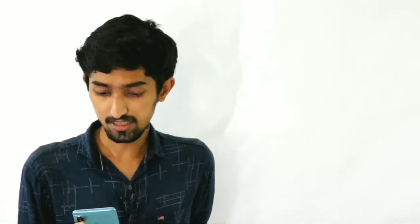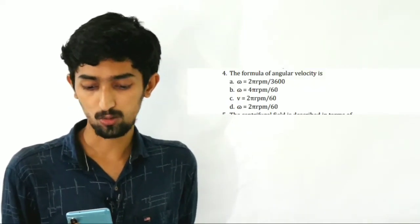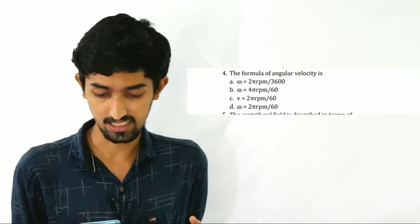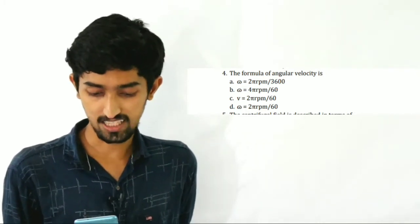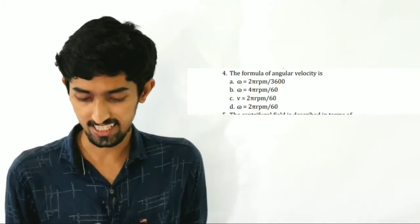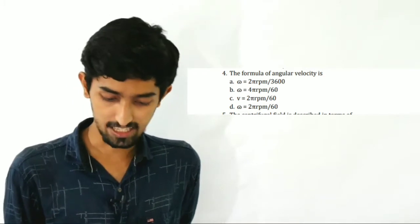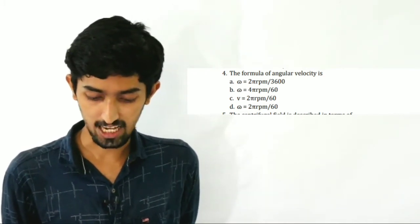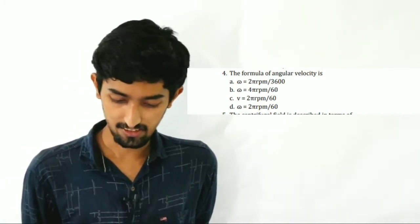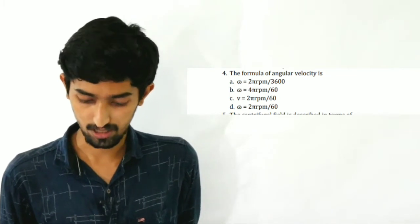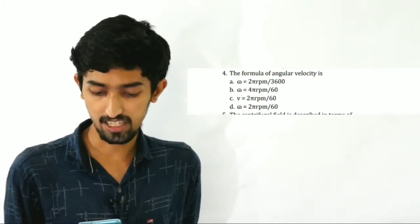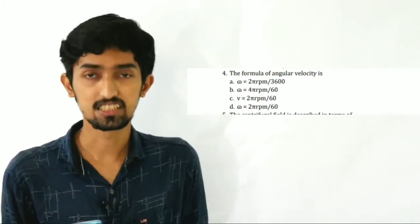Now let's look at the formula of angular velocity. Option A: Omega equals 2π rpm divided by 3600. Option B: Omega equals 4π rpm divided by 60. Option C: V equals 2π rpm divided by 60. Option D: Omega equals 2π rpm divided by 60.